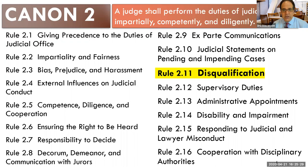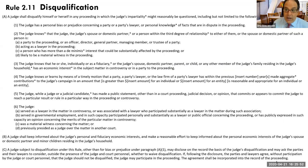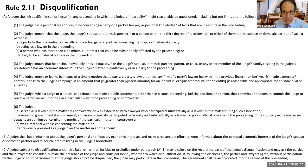Today we're only going to talk about Rule 2.11 — disqualification — which a lot of people, or lay people outside the law, would call recusal. This is when judges recuse themselves or pass a case to a different judge, excusing themselves from a case. The rule has an A section with six parts — subparts two and six each having four subparts — and then a B and a C that are pretty straightforward rules we'll get to at the end.